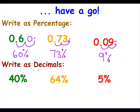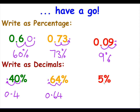Now writing a percentage as a decimal. For 40%, divide by 100 — move the decimal point two places — and we end up with 0.4. For 64%, divide by 100, moving the decimal point two places, gives 0.64. And finally, 5%: the decimal point is after the 5, so divide by ten then by a hundred — we have an empty place which we fill with a zero — giving us 0.05.